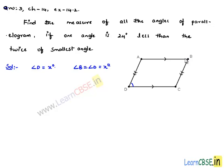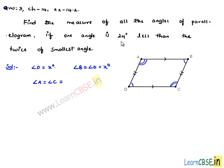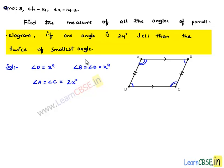So we have the two smallest angles. The other two will be the largest angles, that is, angle A and angle C. Therefore, angle A is equal to angle C. The largest angle is 24 degrees less than twice the smallest angle, so angle A equals angle C equals 2x minus 24 degrees.